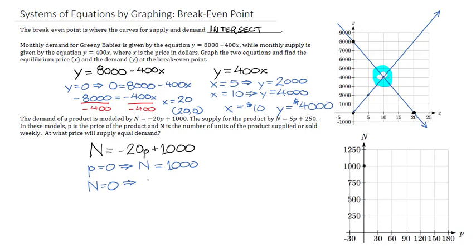If I do that, then I'm going to have 0 equals negative 20p plus 1,000. I can add 20p to both sides. I'll get that 20p is 1,000, and then it works out that p equals 50. That tells me that when p is 50, n is going to be 0. Once again, we draw a straight line through.